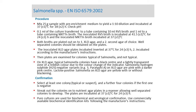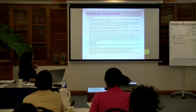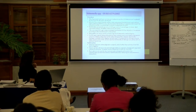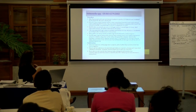Then you transfer 0.1 mL to a tube containing 10 mL of RVS broth, and 1 mL to a tube containing the Müller-Kaufmann broth. These different tubes are incubated at different temperatures for different times, then plated out on different agar — one specified and the other of your choice. The plates are looked at for typical Salmonella colonies, which have a black center, are slightly transparent, with a reddish color surround. Confirmation tests can also be applied.